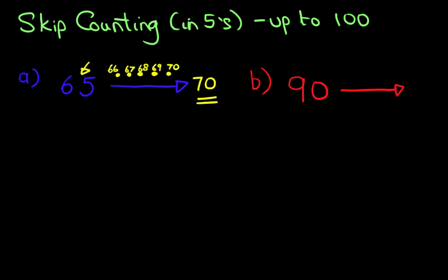What number comes after 90 if we are counting in fives? So let's draw five dots: one, two, three, four, five. We've spread the dots out this time.